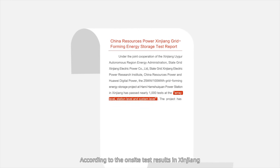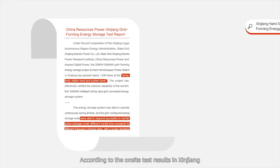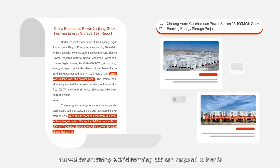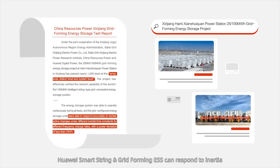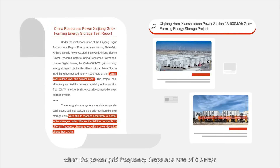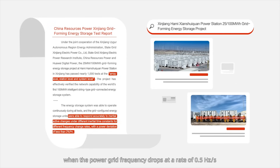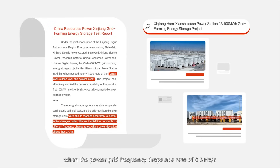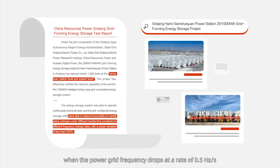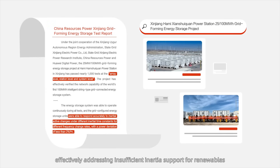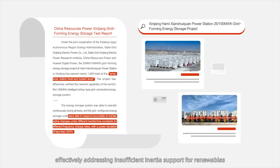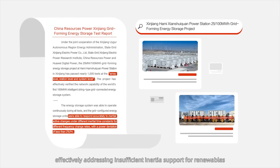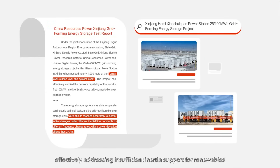According to on-site test results in Xinjiang, Huawei SmartString GridForming ESS can respond to inertia when the power grid frequency drops at a rate of 0.5 Hz per second, effectively addressing insufficient inertia support for renewables.